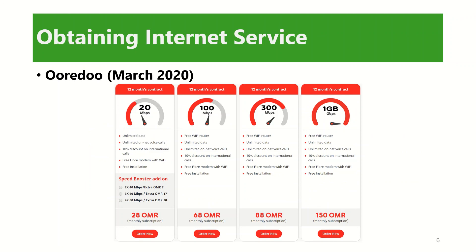Now let us look at Ooredoo. As of March 2020, the company offers a fiber optic connection on a 12-month contract. You can have a minimum of 20 Mbps for a fee of 28 Omani rials, and if you have a higher budget, you can get as much as 1 Gbps for a fee of 150 Omani rials.